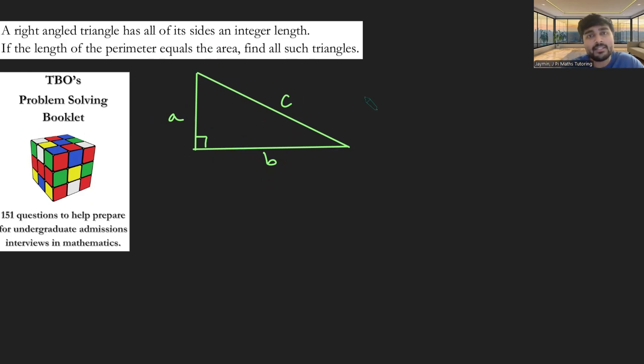And we're told that the perimeter equals the area. So the perimeter is A plus B plus C, and the area is a half AB. And of course, this is a right-angled triangle, so everybody's favourite theorem, Pythagoras' theorem, is going to come into play here.